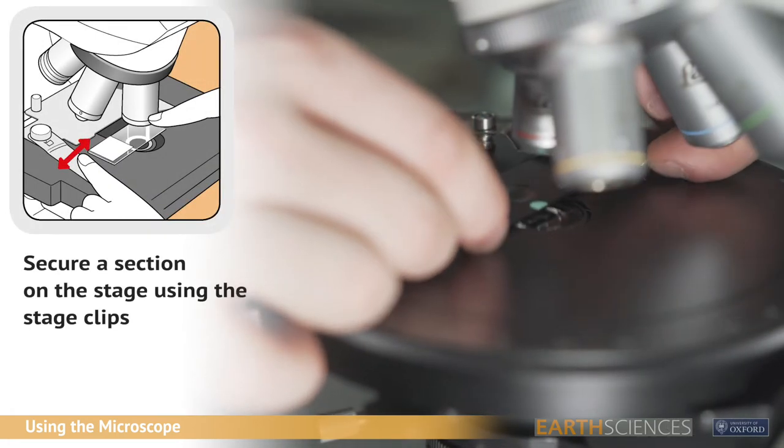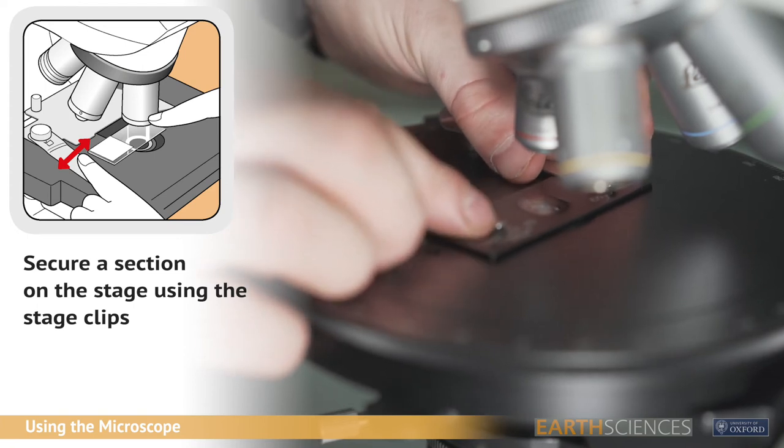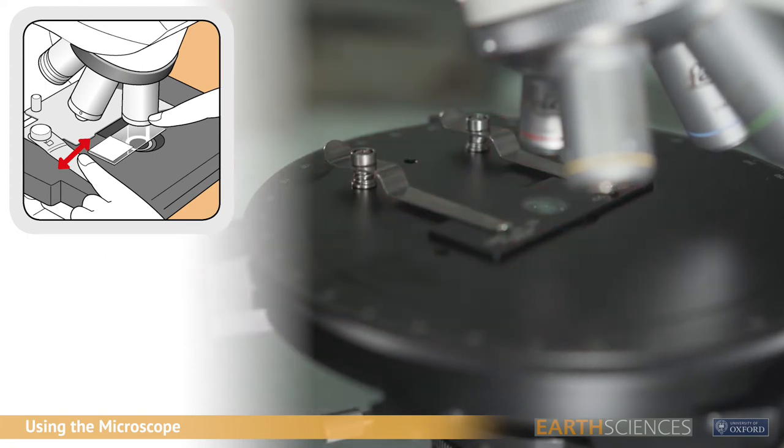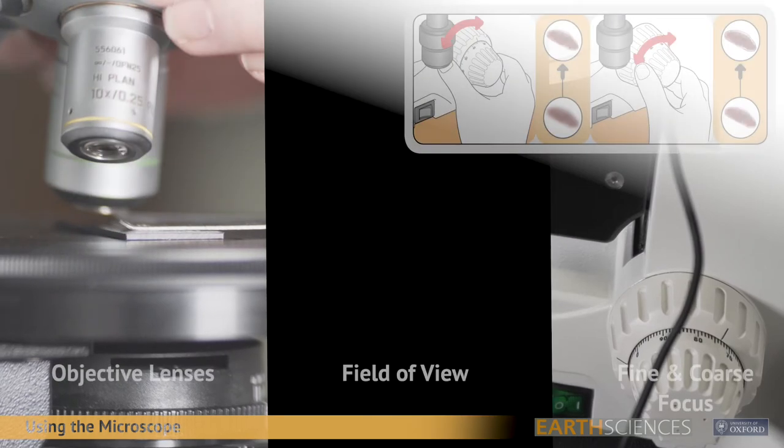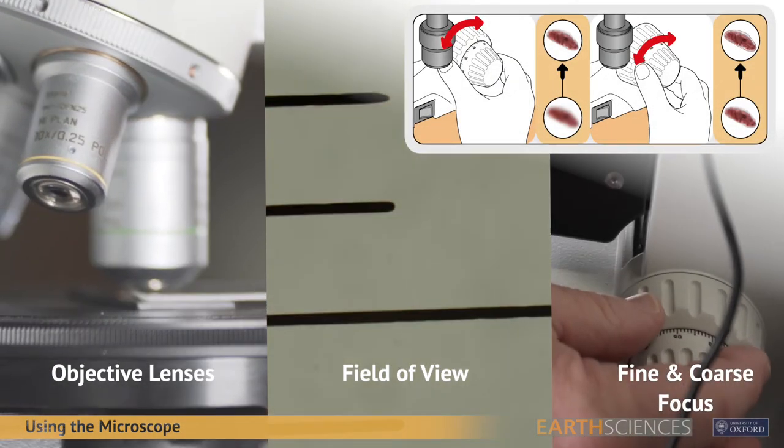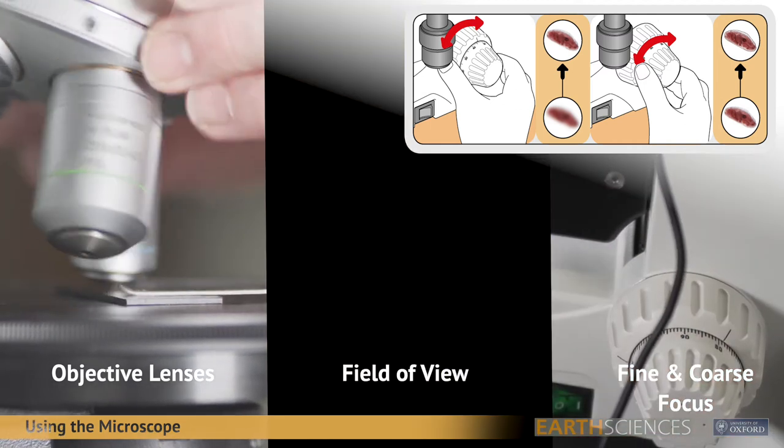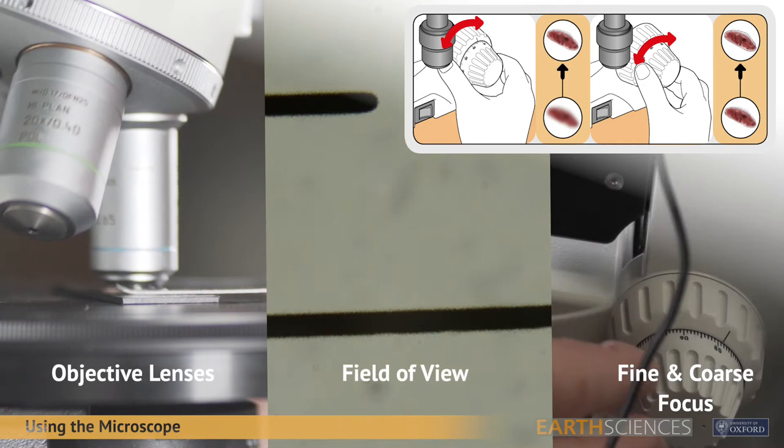Place a section on the stage and fix in place using the stage clips. Use the coarse and fine focus knobs to focus the image as much as practicable, working up to at least 40x magnification. Only the fine adjustment should be required once you have established focus at lower magnifications.